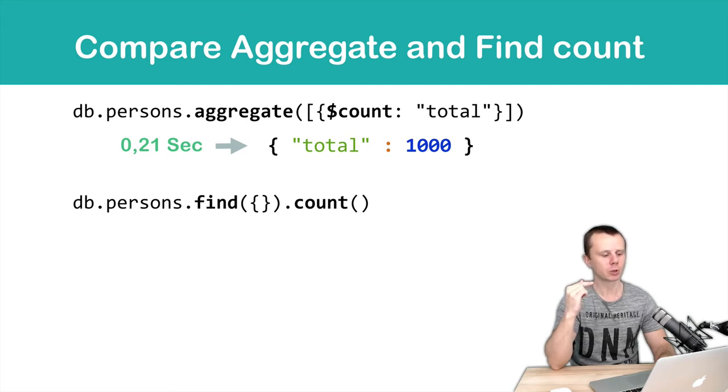What if you just use db.persons then find with an empty query and count helper method? The result will be 1000 and, surprise, it will take the same time.